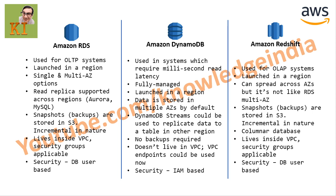The first one is Amazon RDS, which is a Relational Database Service. As the name says, it works for OLTP systems - Online Transactional Processing. A simple example is movie ticket booking: there's a database storing user details, cinema hall info, movies running, and show timings. RDS gives you all that flavor - Oracle, SQL Server, MySQL, PostgreSQL, and more.